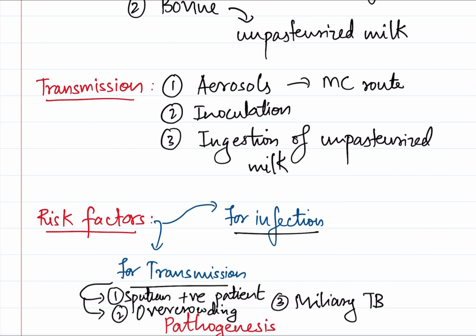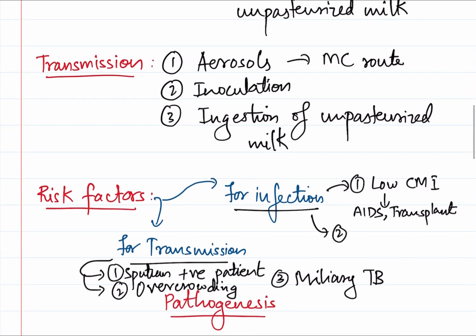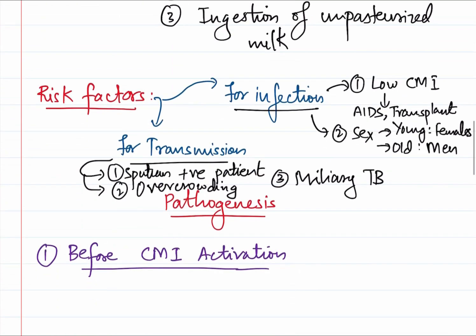Coming to the infection, it is cell-mediated immunity (CMI) which is responsible for controlling the infection. People with low cell-mediated immunity or immunocompromised individuals will have a greater tendency to develop active infection. This includes people with AIDS, transplant recipients, people with kidney diseases undergoing hemodialysis, diabetes, and all sorts of immunocompromised conditions. Regarding age, amongst older individuals men are more affected, whereas amongst younger individuals females are more affected than males.